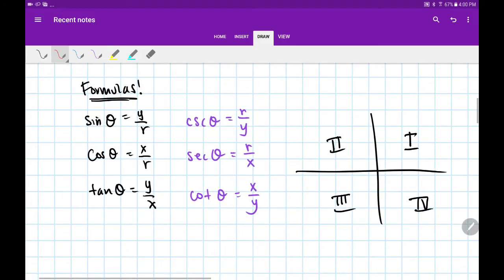Before we dive in, we learned a couple new formulas today. Our old ones are sine θ = y/r, cosine θ = x/r, and tangent θ = y/x, but we also learned these three new trig ratios.